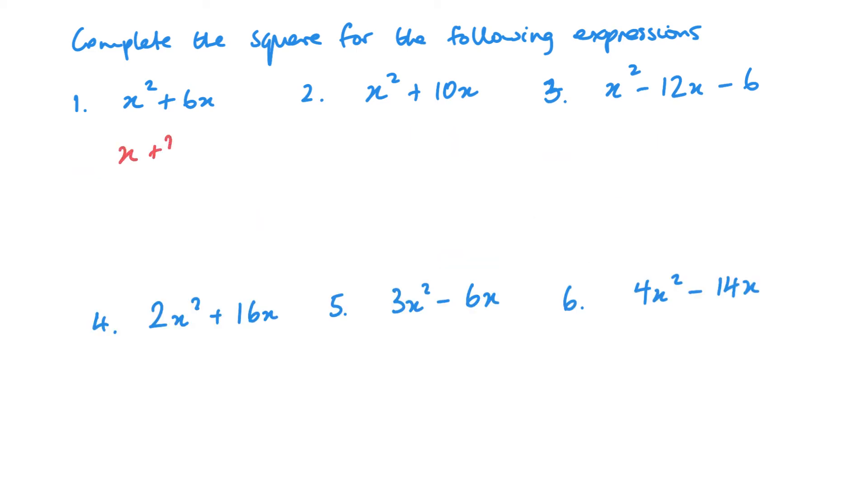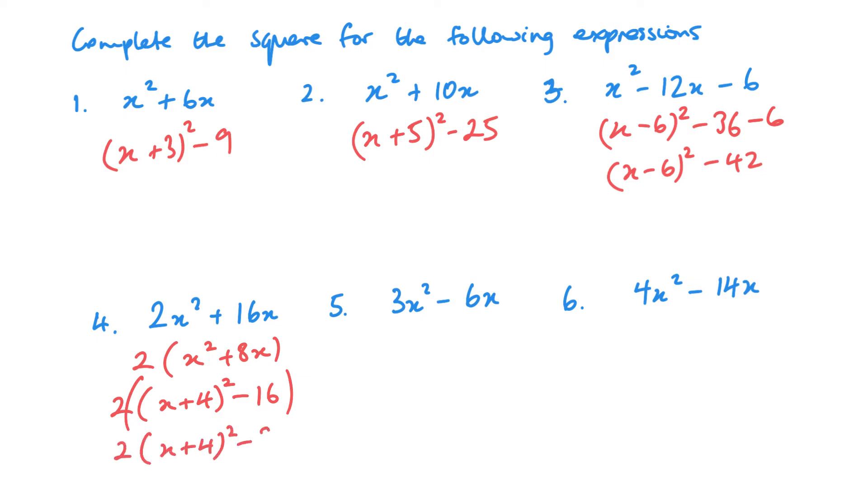Okay, answers. So x plus 3 squared minus 9, x plus 5 squared minus 5 squared essentially. X minus 6 squared, we got minus 36 minus the 6, so x minus 6 squared minus 42.